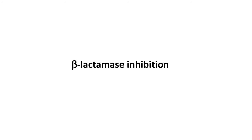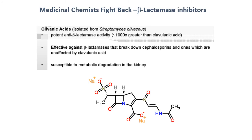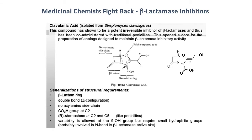A different approach to defeating beta-lactamases is to inhibit the enzyme directly. Rather than shielding access — which is not always possible — the concept is to make a separate drug which can be co-administered with your antibiotic and specifically inhibit the beta-lactamase enzyme. Oluvanic acid, first isolated from Streptomyces, is a potent beta-lactamase inhibitor. It has a basic structure very similar to the penicillins, containing a beta-lactam ring. It is mistaken by beta-lactamase as a substrate, and inactivates the enzyme in the process.